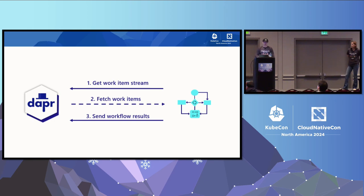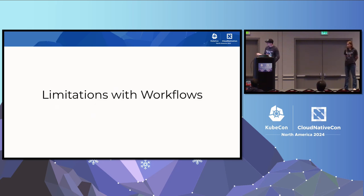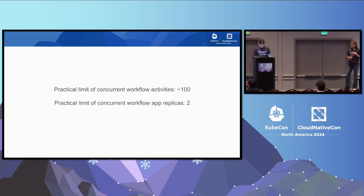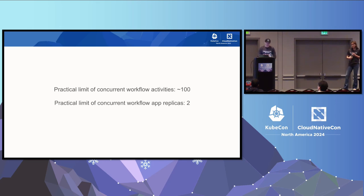The sidecar and the application talk to each other through a gRPC streaming connection where you get the work item stream. You get work items and they get executed on the application, and then the results are sent back to the DAPR sidecar. Workflow still had limitations — a practical limit of about 100 activities and it could only run with two replicas, so it was really alpha stage. The Diagrid open source team has been working hard to redesign the early decisions to make this scale.